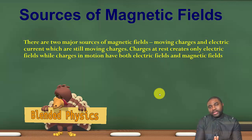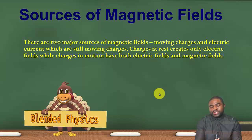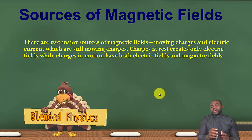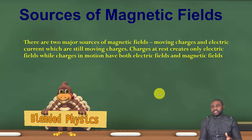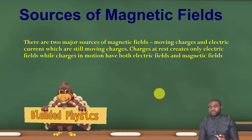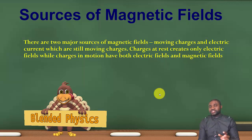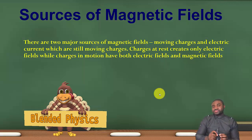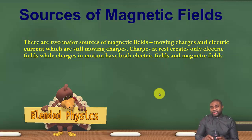Hello everyone. In this lesson, we will study how to calculate or determine the magnetic field generated by a moving charged particle. We know that a moving charged particle generates a magnetic field. In the same light, electric currents also generate magnetic fields. The reason is because current electricity is actually due to the flow of charges. This means that the magnetic field generated by a given wire is the sum total of all the magnetic fields generated by all the electrons that constitute the current in that wire.